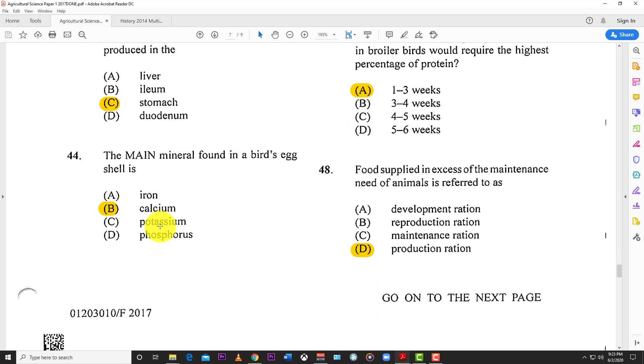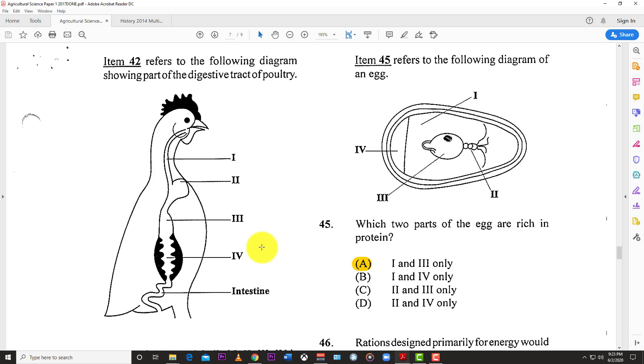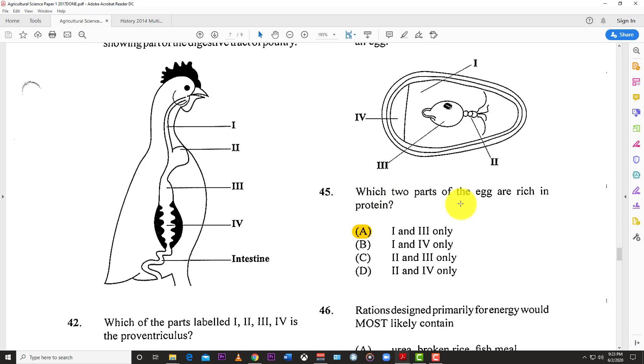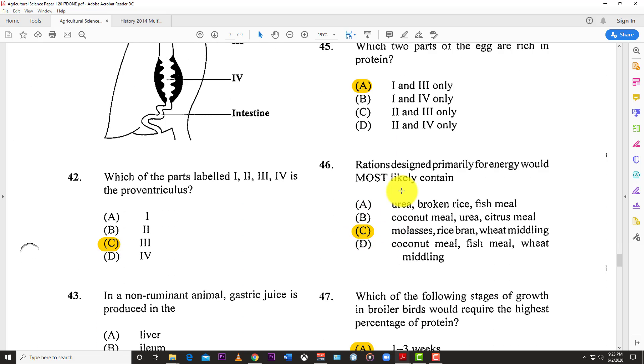Number forty-three: In a non-ruminant animal, gastric juices are produced in the stomach. Number forty-four: The main mineral found in a bird's eggshell is calcium.